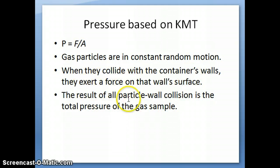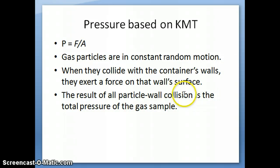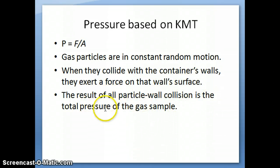The total pressure that we observe and can measure — for example, with a barometer or manometer — is just the result of all the particle-wall collisions. You have all of these collisions from all the different particles in your sample, and when you add all of them together, what you get is the total pressure of the gas sample.